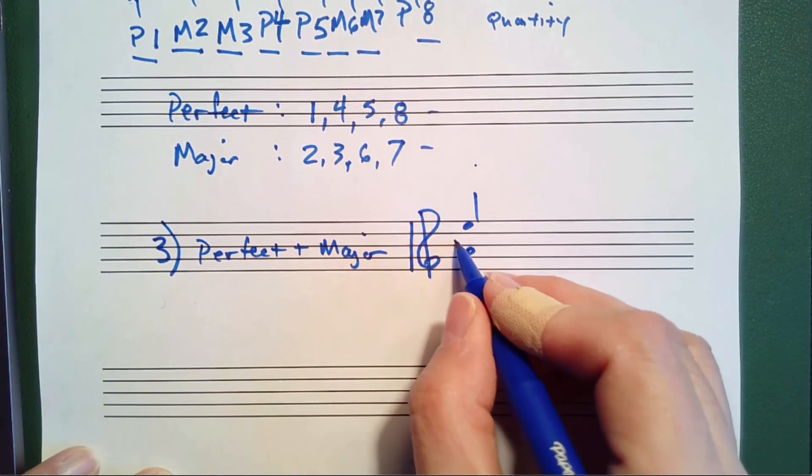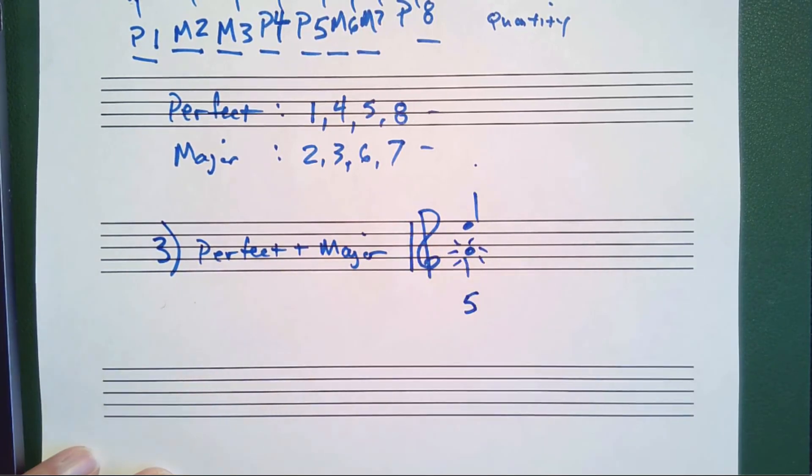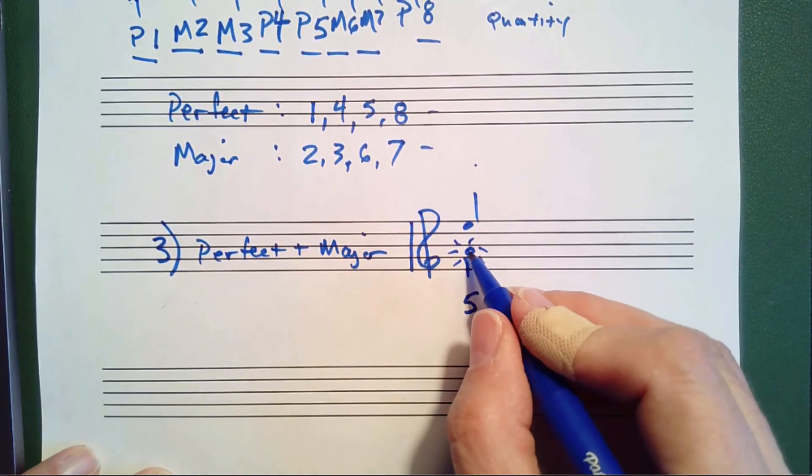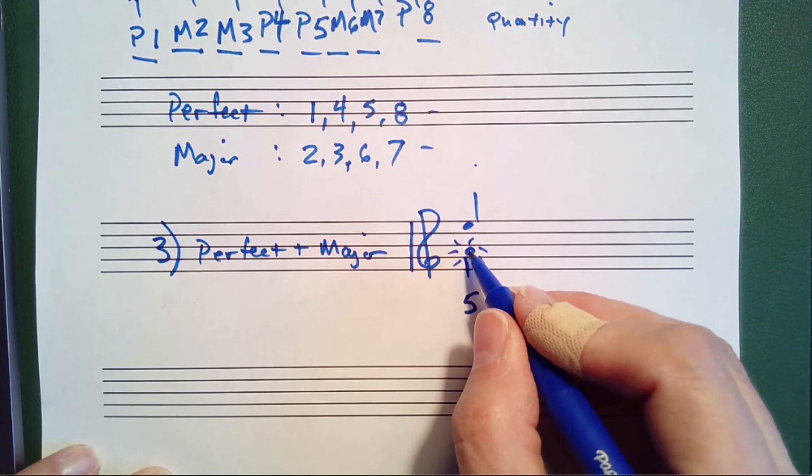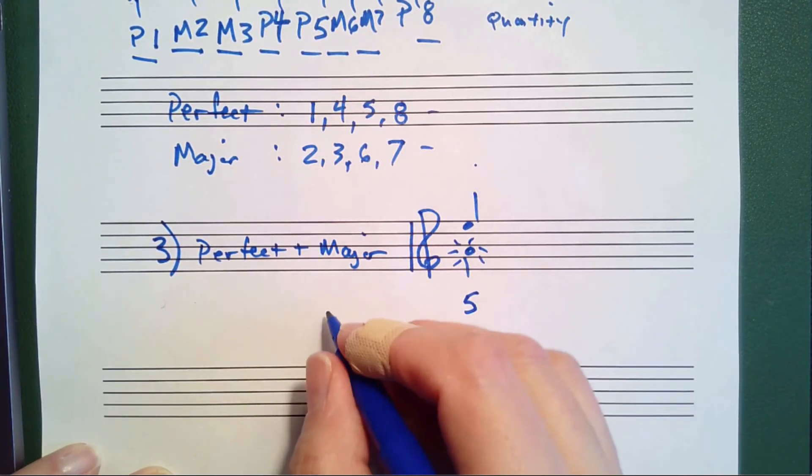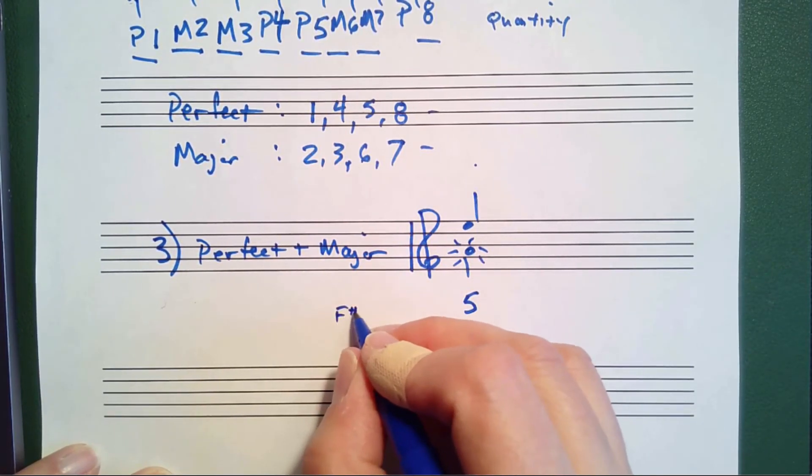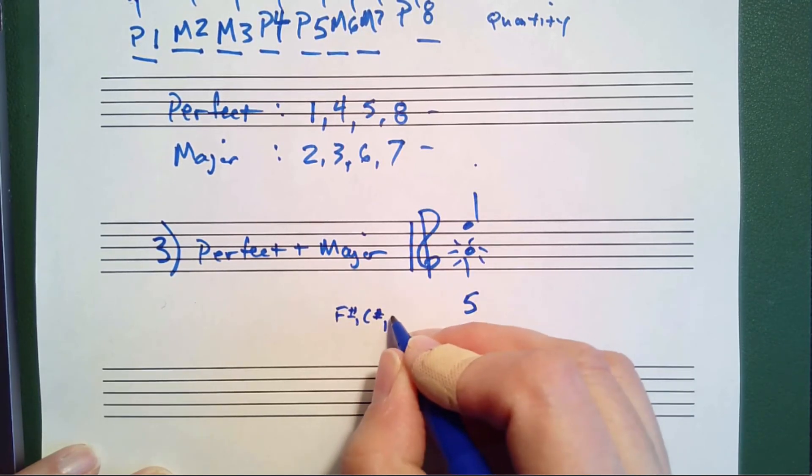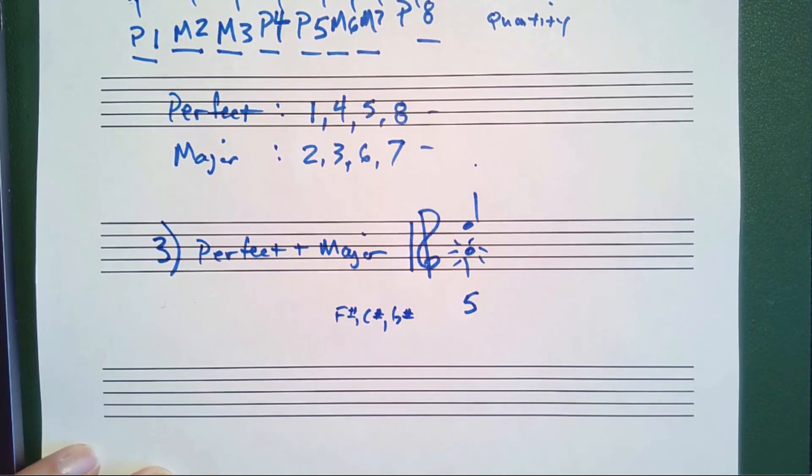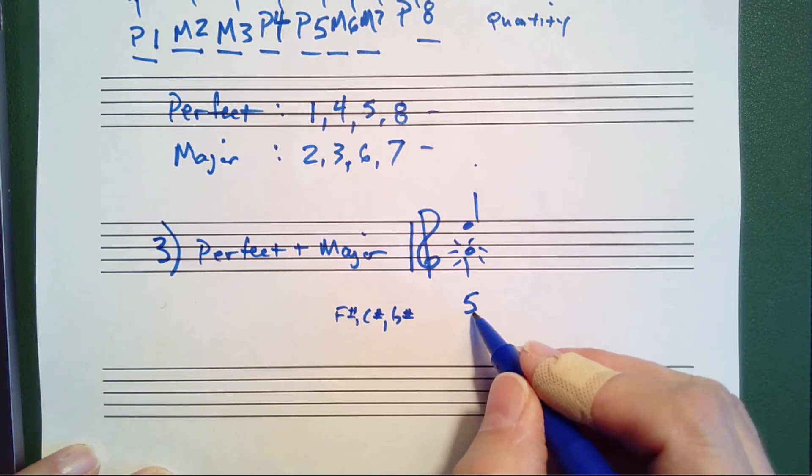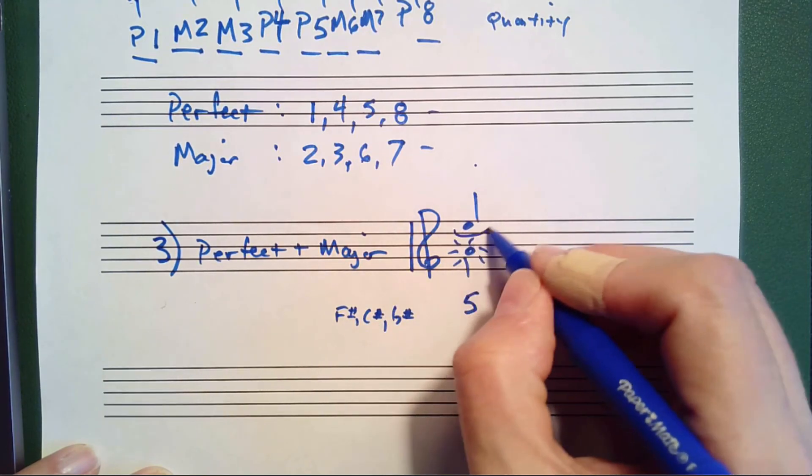Next, we want to look at the key signature of the bottom note. If you remember your key signatures in A major, we had F sharp, C sharp, and G sharp.